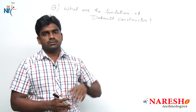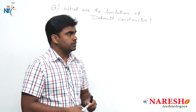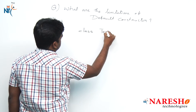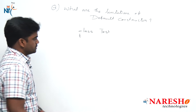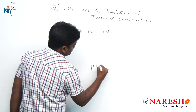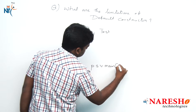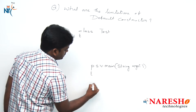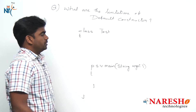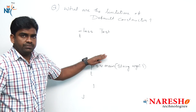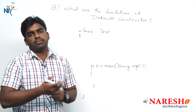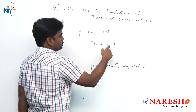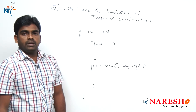But now, what are the limitations? Suppose we are writing a class called class Test. In the Test class we are writing only the main method — public static void main(String args) — only this much. We are not writing any constructor definition in this program. No problem — at the time of compilation, the compiler will supply a constructor with the class name, zero arguments, and an empty body.